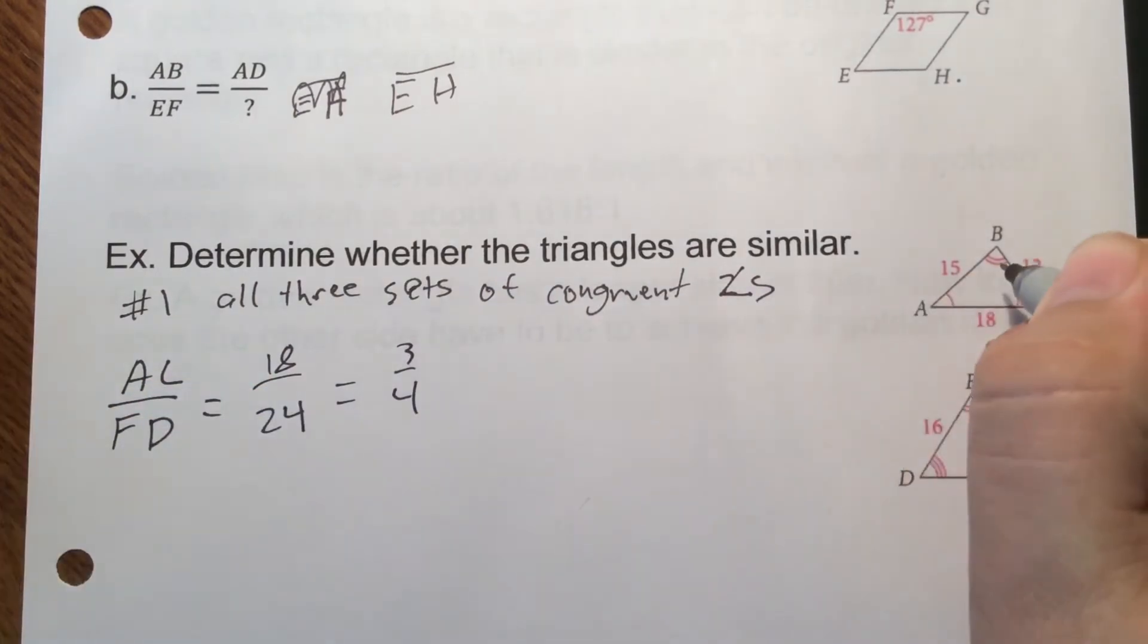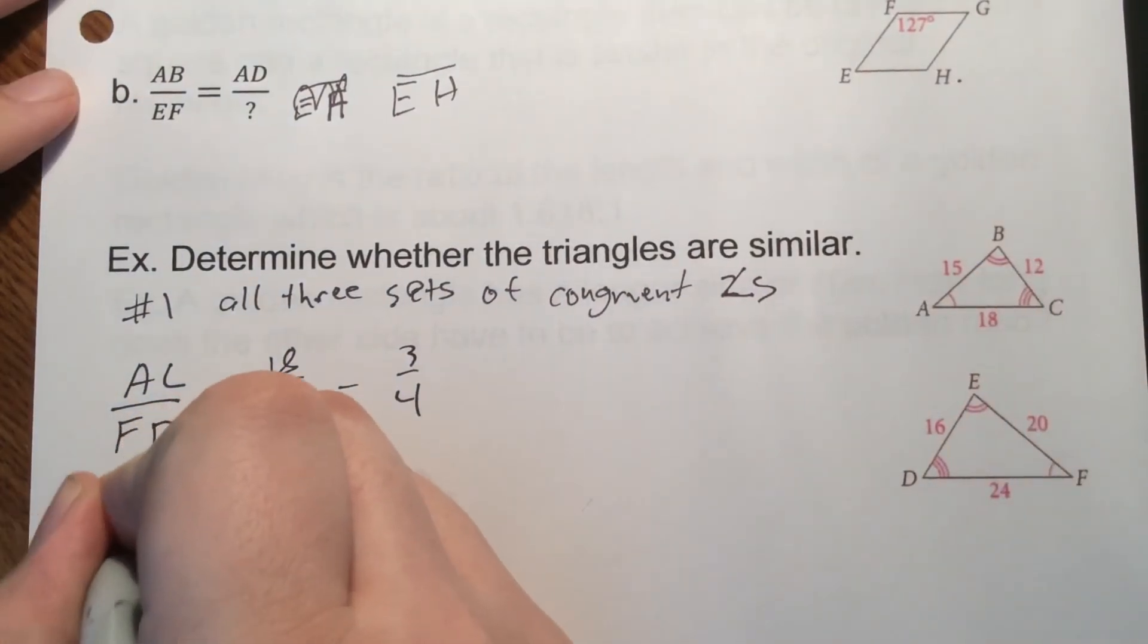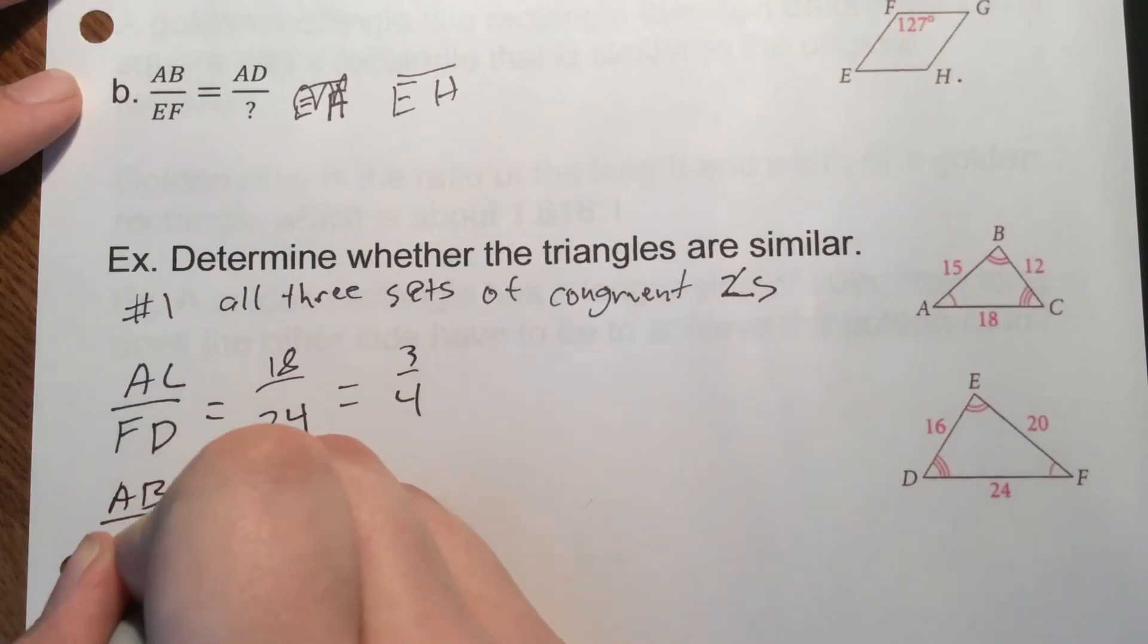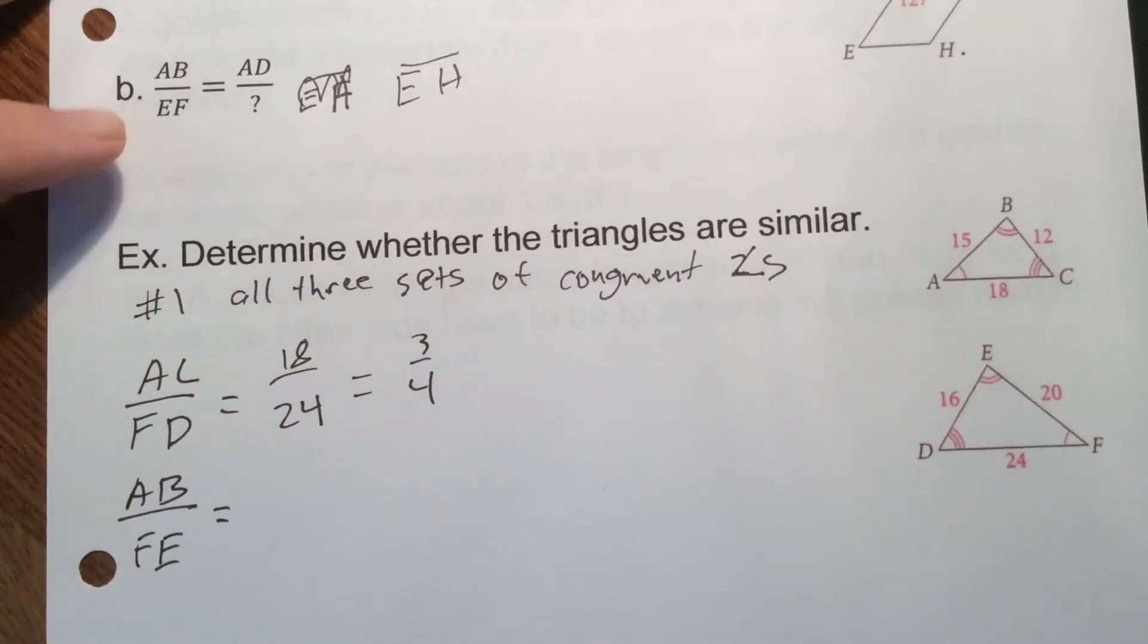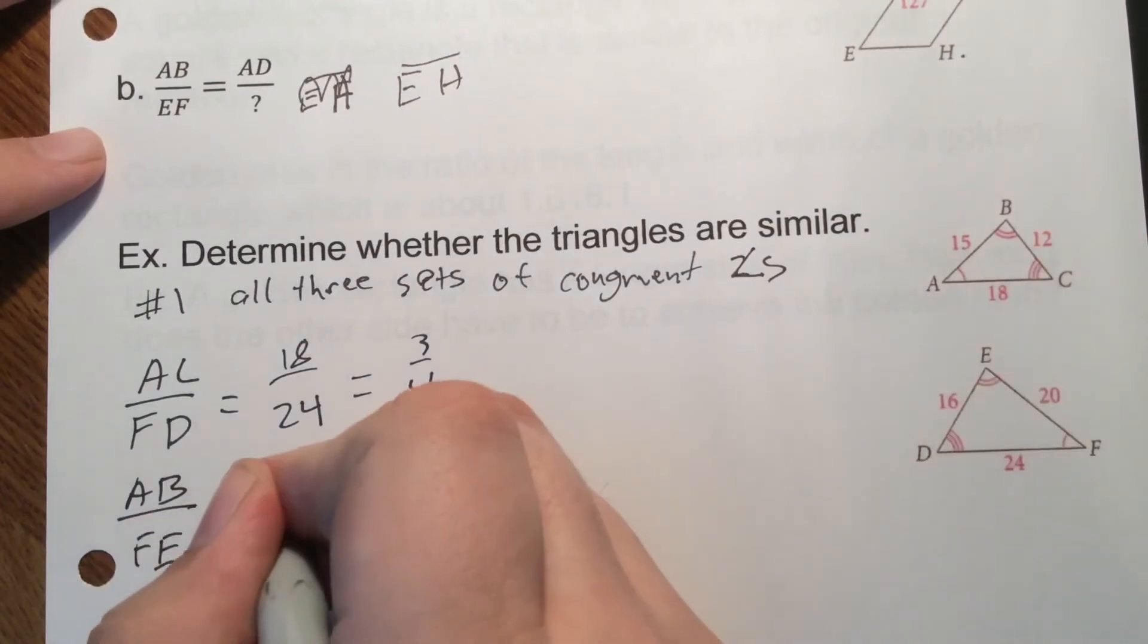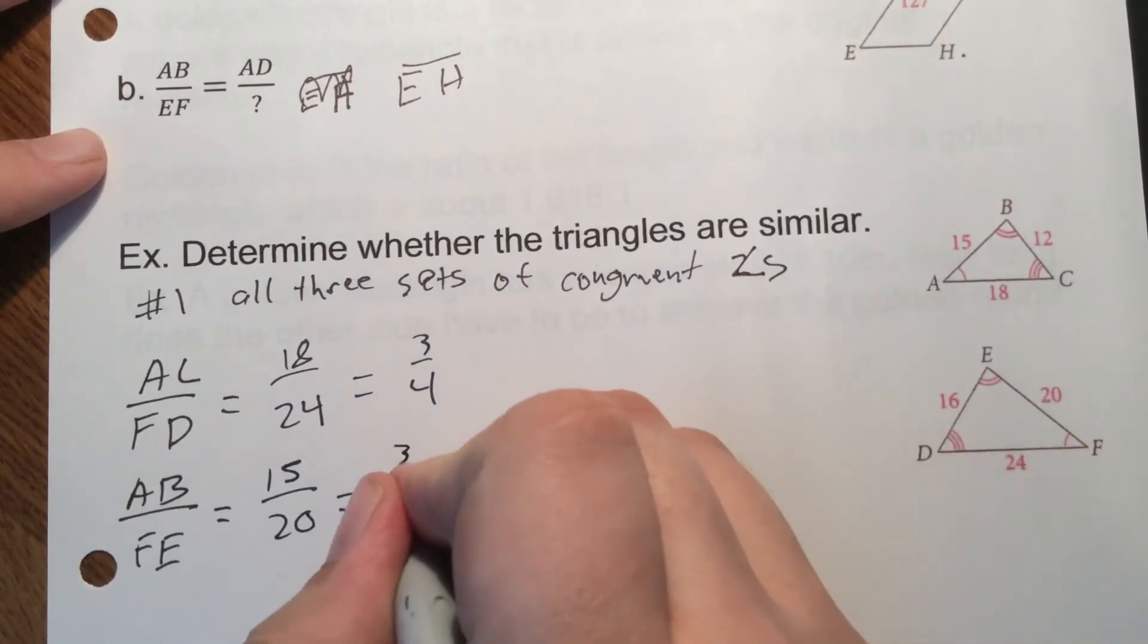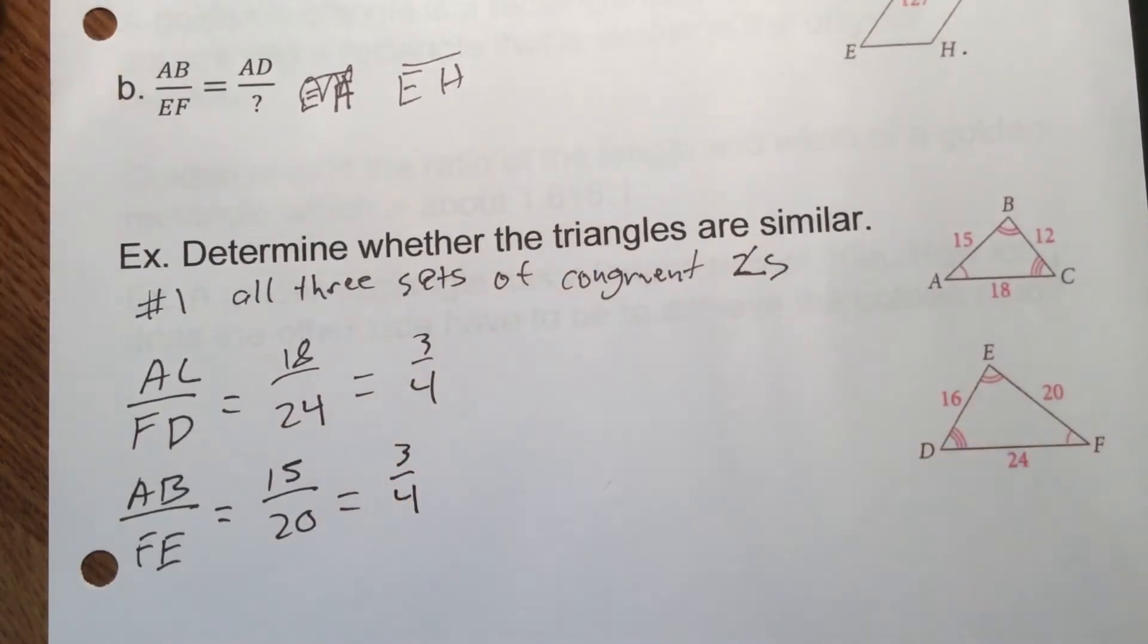So the next one we could do is AB. Well AB is this side going from the single to the double. So single to the double would be FE. So we're going to compare those lengths. So AB is 15, FE is 20. Well, if we reduce that again, we're going to get three fourths. So, so far so good.